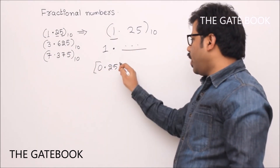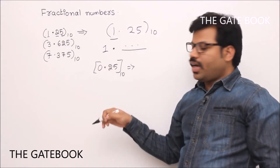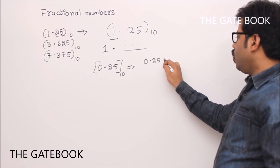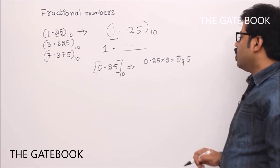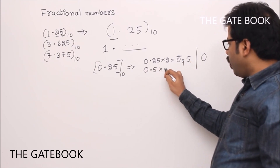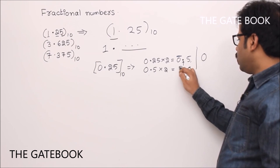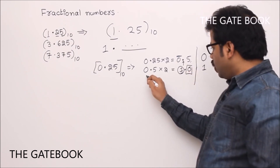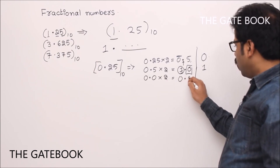Now we are going to convert 0.25 to binary. The idea is: rather than dividing, this time we multiply. Take 0.25 into 2 — what is the answer? 0.5. The integer part here is 0, so remember that 0. Next, take the remaining part 0.5 and multiply with 2. 0.5 into 2 is 1. Whenever you get 1, remember that 1. Then take remaining part 0.0. 0.0 into 2 will be 0.0, so take 0.